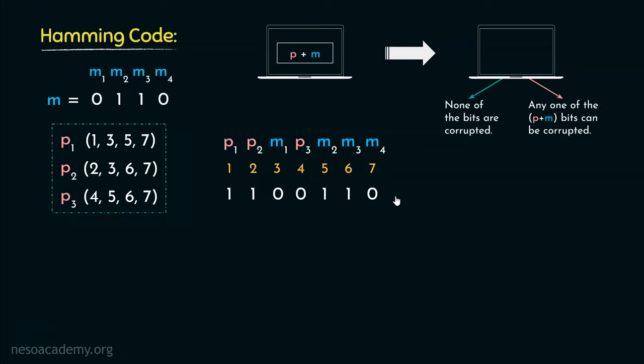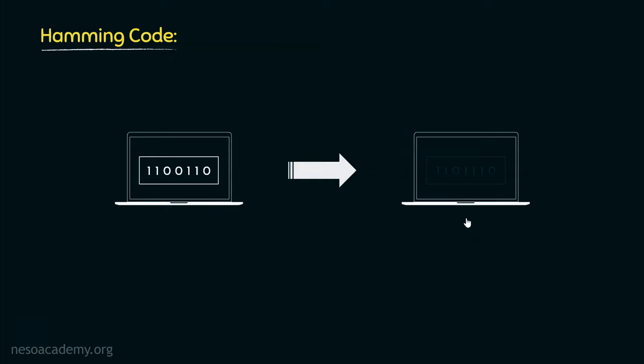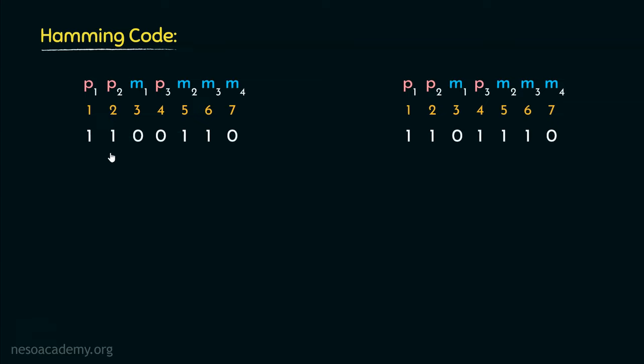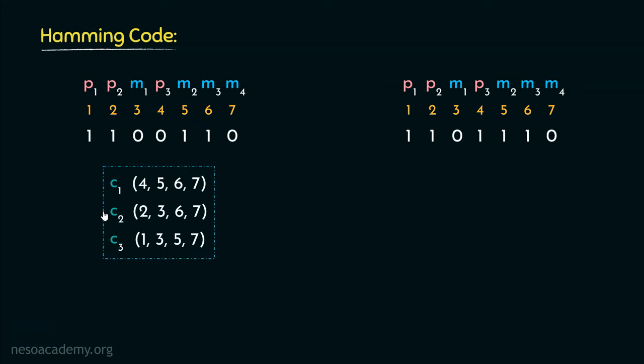Say the sender transmits this message. However, the receiver receives a different message — observe, these two are different and thus the received one is invalid, because a particular bit got toggled during transmission. Let's see how Hamming code is going to resolve this. This is the bit sequence the sender sent, and this is the bit sequence delivered at the receiver's side. At the receiver's side, C1, C2 and C3 are supposed to handle the error correction.